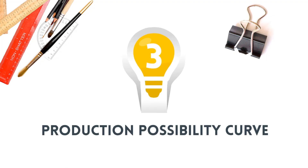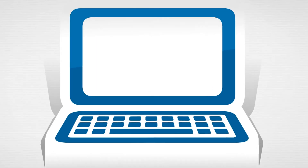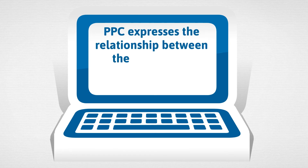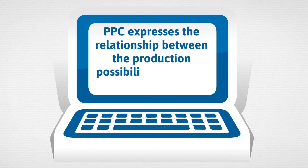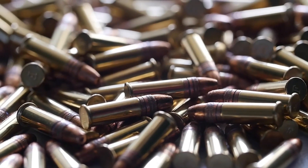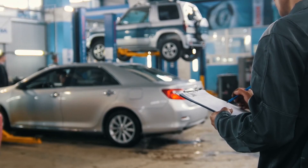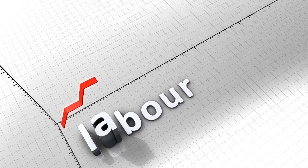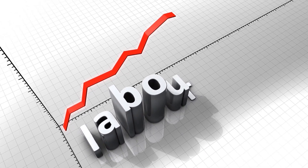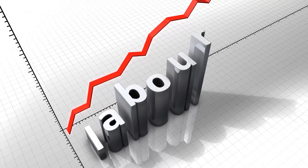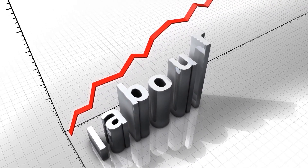Production possibility curve is another popular economic curve that expresses the relationship between the production possibilities of goods and services. Let us suppose that an economy produces ammunitions and automobiles, and that labor is the factor of production used to produce both. Labor is available in limited quantity.